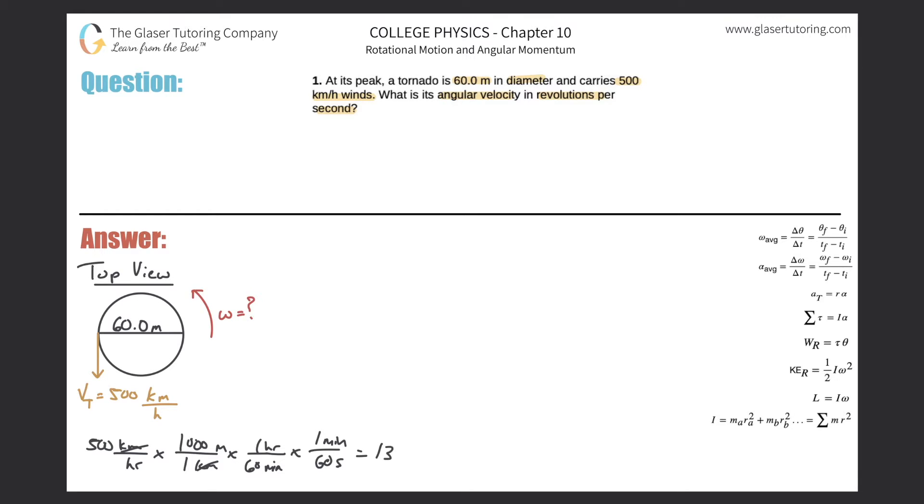So you can just simply do this, 500 times 1000 divided by 3600 essentially, and we get about 139 meters per second. Okay, so that's pretty crazy. Now what we're being tasked to find out is the angular velocity.